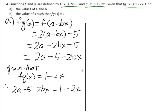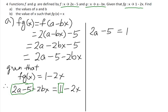Let's equate this function by matching the constant terms and the coefficients of x. The constant term: 2a minus 5 equals 1, so 2a equals 1 plus 5, and a equals 6 over 2, therefore a equals 3.